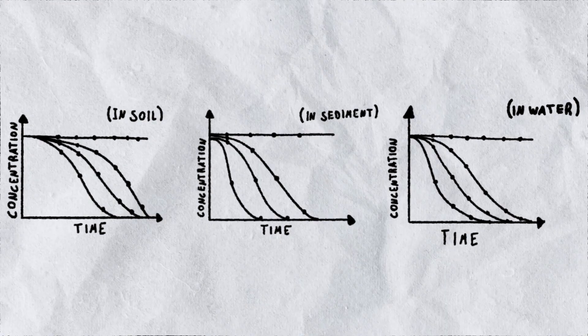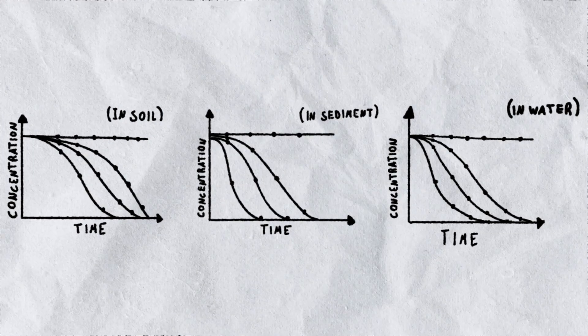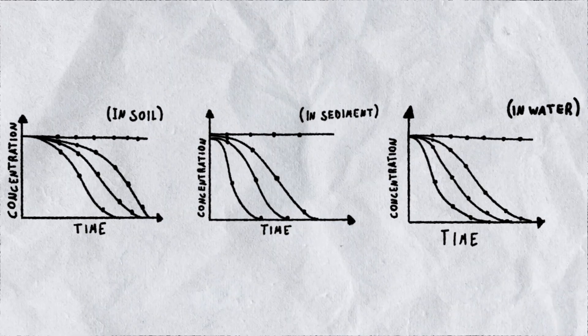A common value that scientists look for in a substance is called its dissipation half-life, which is the time it takes for its concentration to decrease by 50%.